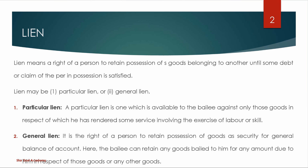General lien is the right of a person to retain possession of goods as security for a general balance of account. This type of right is exercised in a general balancing of accounts. Normally, bankers, attorneys of high court, policy brokers, etc. generally exercise a balance in their account.